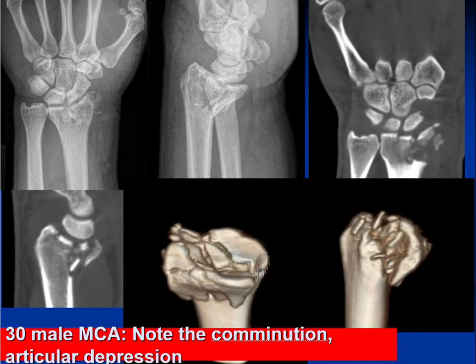This slide is more representative of what may be seen in high-energy volar marginal fractures, with the classic volar shear, central depression, articular comminution, as well as the suggestion of a possible dorsal cortical break.